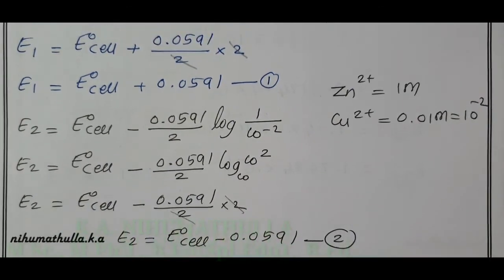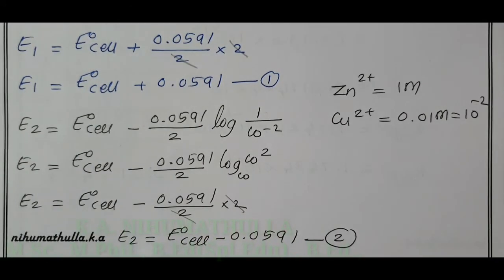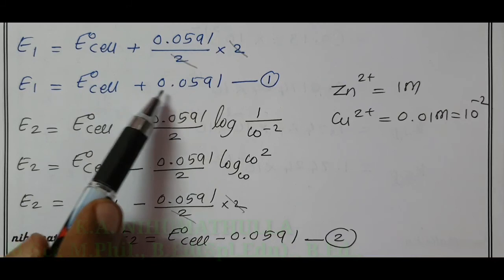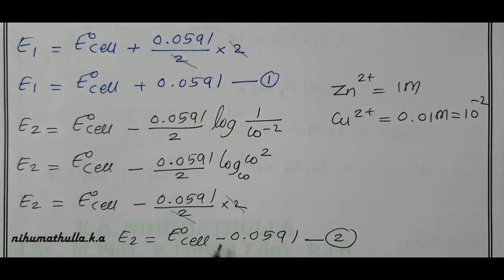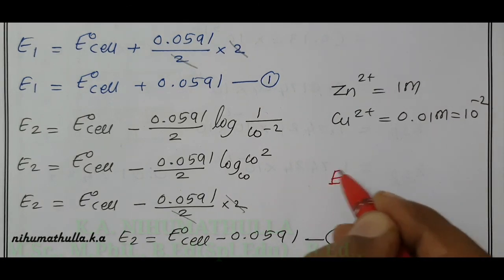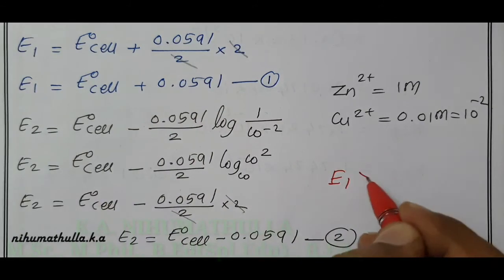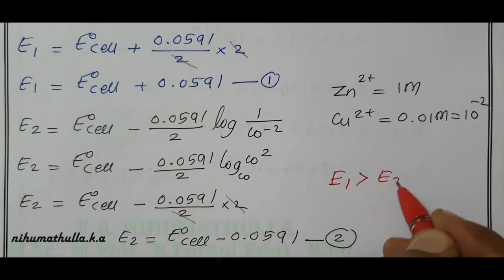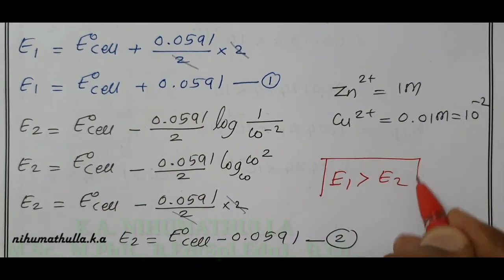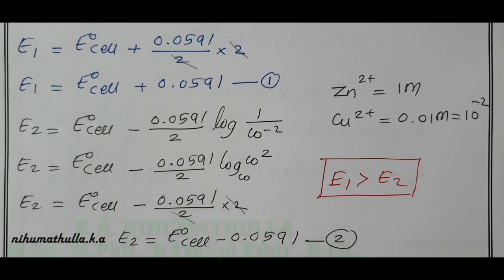Comparing equations 1 and 2, E° cancels out. E1 = E°_cell + 0.0591 and E2 = E°_cell − 0.0591. Since E1 has a positive value and E2 has a negative value, E1 is greater than E2. Thank you for watching. If you like, please subscribe.